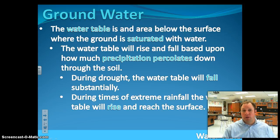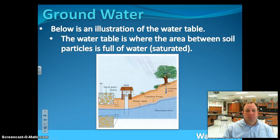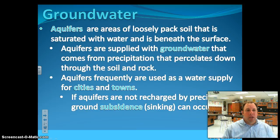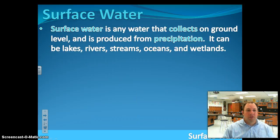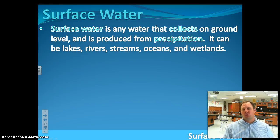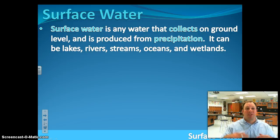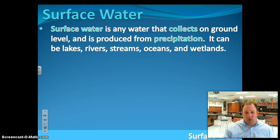We get water out of the ground using wells or from aquifers, drilling down to the ground. Then we have surface water. Surface water is the water that runs across the surface. It could be rivers, lakes, streams, oceans, and wetlands — but it's the water that's on top of the ground, not necessarily the water that's underneath the ground.